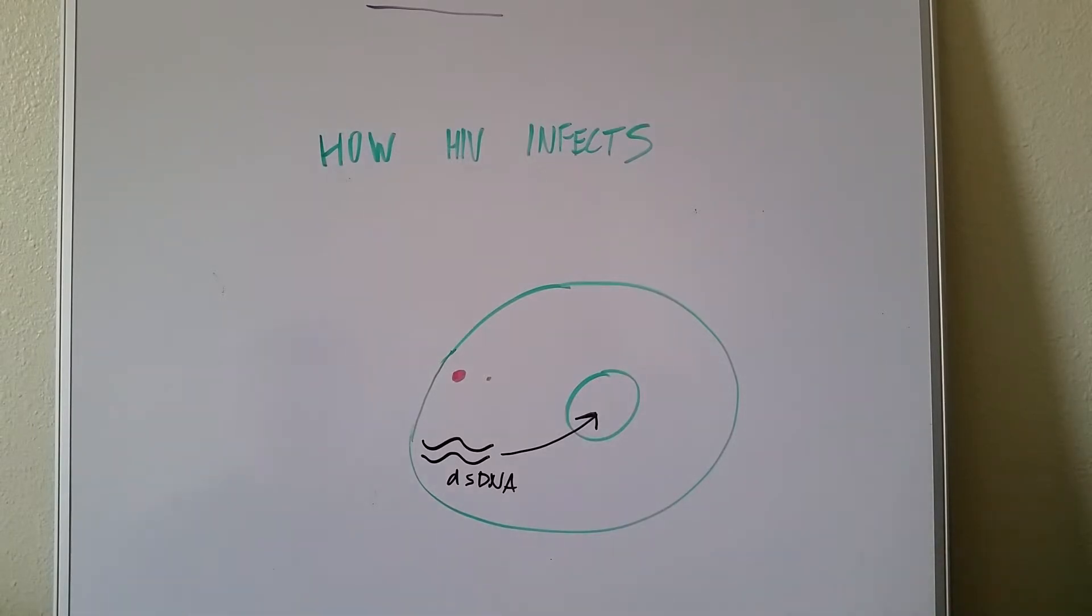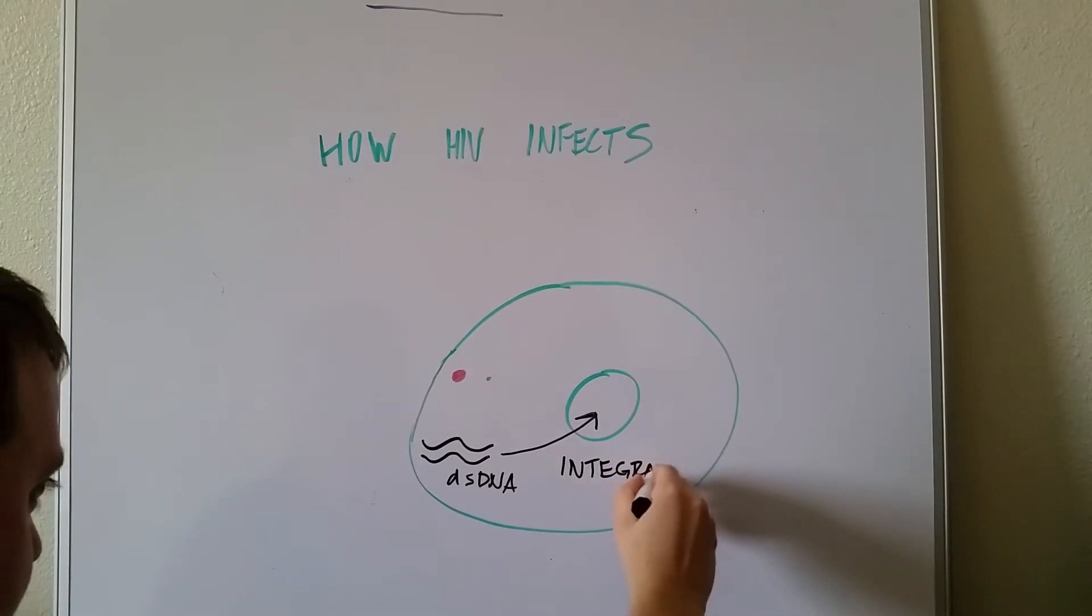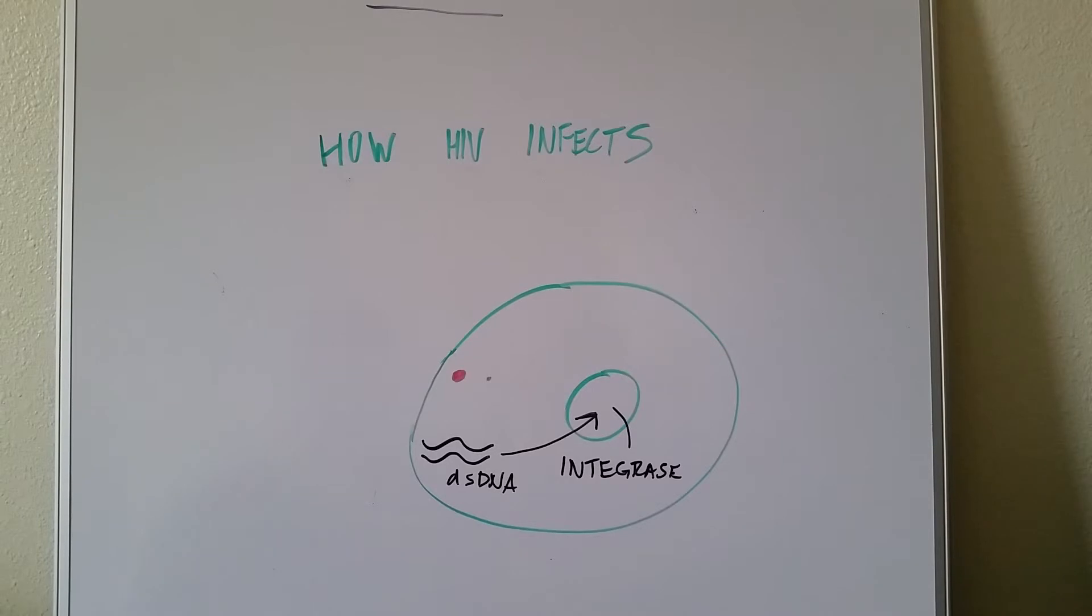And there's another enzyme we talk about, and this is just a normal part of cell machinery. So now the virus is already starting to take over the normal cell, and that is integrase, is inside this nucleus here. Now, what does integrase sound like? Well, it sounds like integrate, integrase integrates the double-stranded DNA into the host cell DNA.